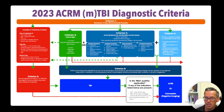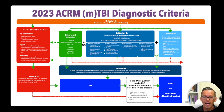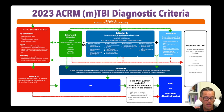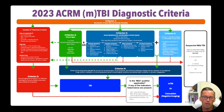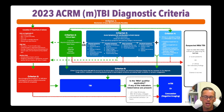What do we diagnose them with if they don't have both criterion three and four? What if they just have three, or just four, or don't have two? There's another diagnosis that came out of the ACRM's meeting: suspected mild TBI. The reason why it's not called suspected concussion is because we don't know if imaging would be positive or negative, and we don't know if they meet the criteria for a concussion.